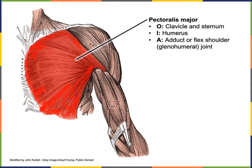When you want to tone your pectoralis majors, a bench press is a common exercise. With a bench press you are performing flexion of the shoulder joint and also a small amount of adduction, but it is primarily flexion of the shoulder joint that is the motion performed during a bench press.